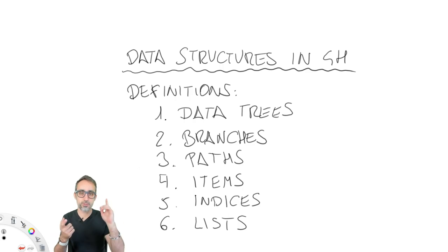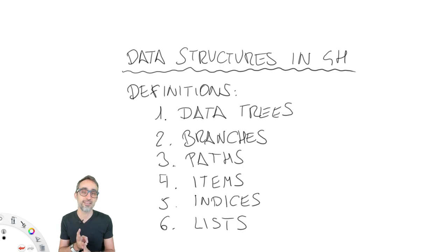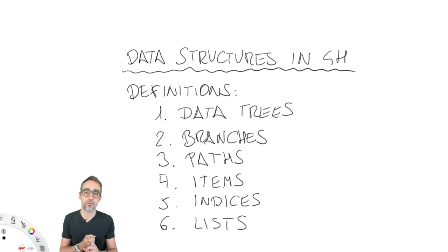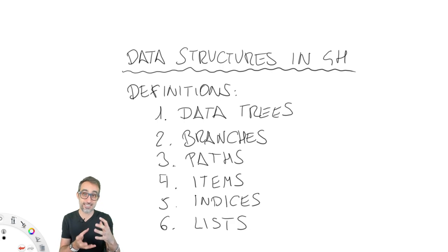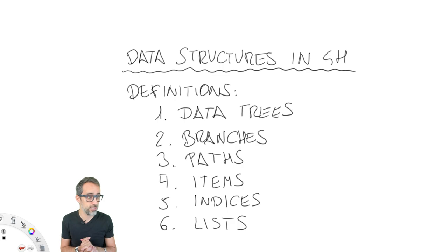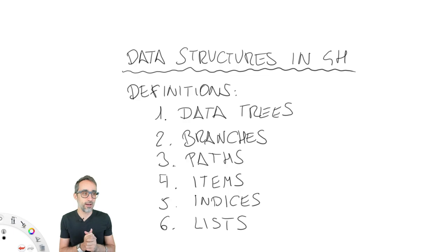So to summarize — data trees, branches inside of data trees, the paths that are the unique names defining each branch, then items as each one of the data points inside of a branch, the indices which are the numbers indicating position inside of the list, and lists as the collection of data inside of each branch — not the whole tree, just each one inside of each branch. If this wasn't clear, please take a look at the video again.